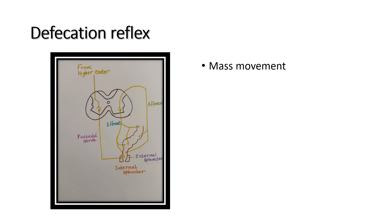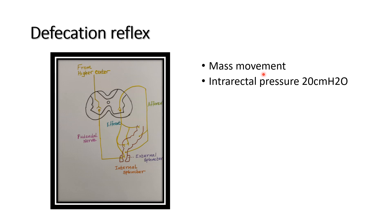The mass movement is helpful for the defecation reflex. The mass movement transits the feces into the sigmoid colon. Normally the rectum is empty. When feces enter into the rectum, it increases the intra-rectal pressure to 20–25 centimeters of water, which initiates the defecation reflex.